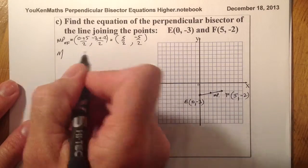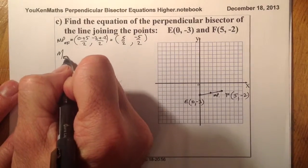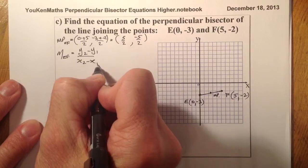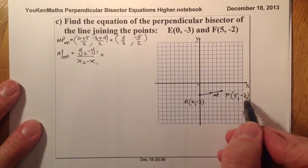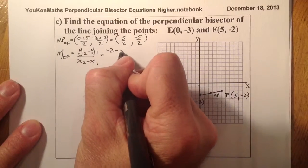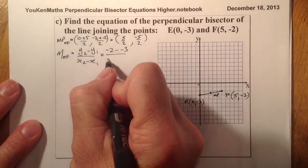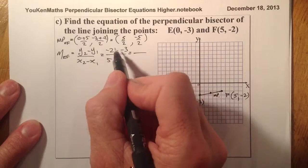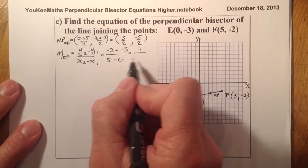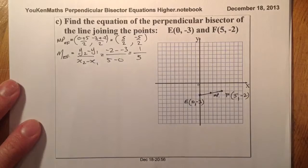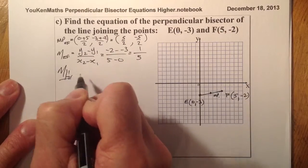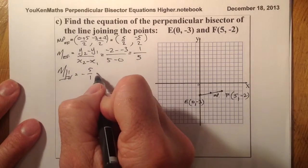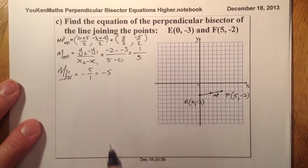Let's find the gradient of EF using the gradient equation. Starting with minus 2 minus minus 3 on top, and 5 minus 0 on the bottom. That gives minus 2 plus 3 equals 1 on top, and 5 on the bottom, so gradient is 1 fifth. The perpendicular gradient: flipping gives 5 over 1, then changing sign gives minus 5.